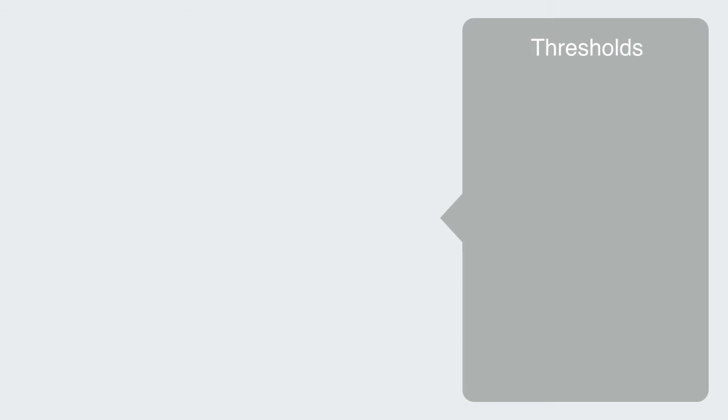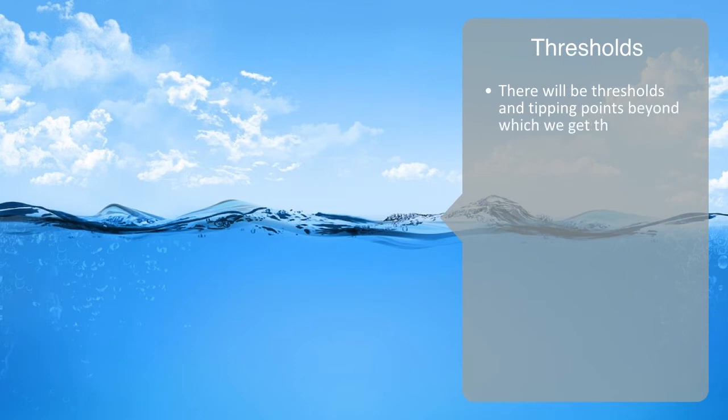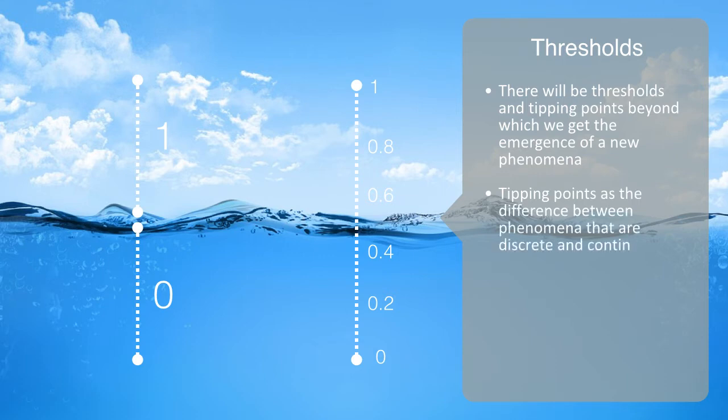As we go up this hierarchy, there will be thresholds and tipping points, beyond which we get the emergence of new phenomena. One way to think about tipping points, is that many emergent phenomena are discrete, meaning either you have them or you don't. Either a city has an airport, or it doesn't. You can't have half an airport. But many factors are also continuous. Like the population of a city, you don't go from one million people, to two million people. There's a long continuum in between.